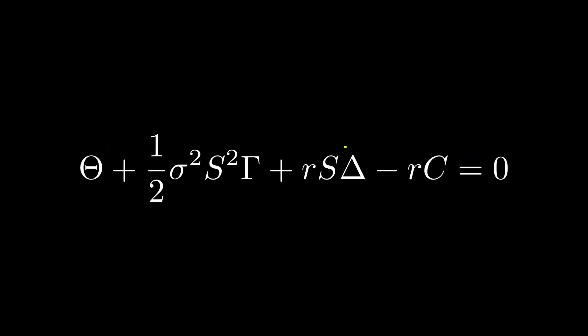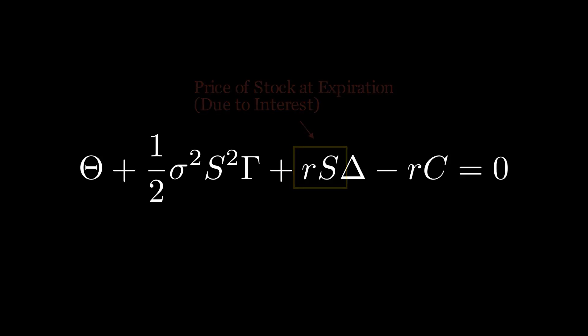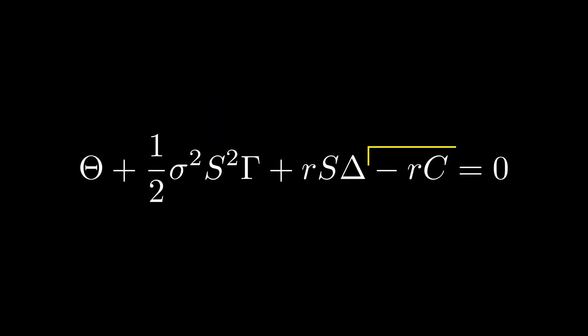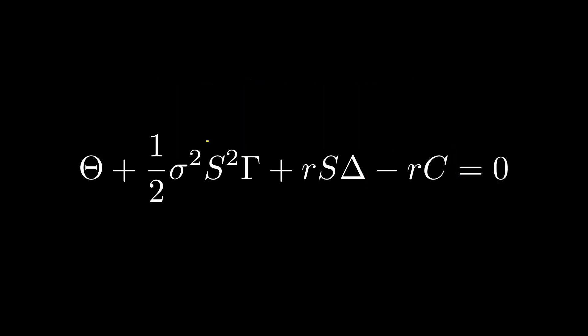You'll also notice discounting terms like RS, which represent the forward price of the stock — the stock's value at expiration if only interest affects its price. Negative RC discounts the call option's value back to present terms, meaning it removes the effects of interest from the option's future value at expiration.